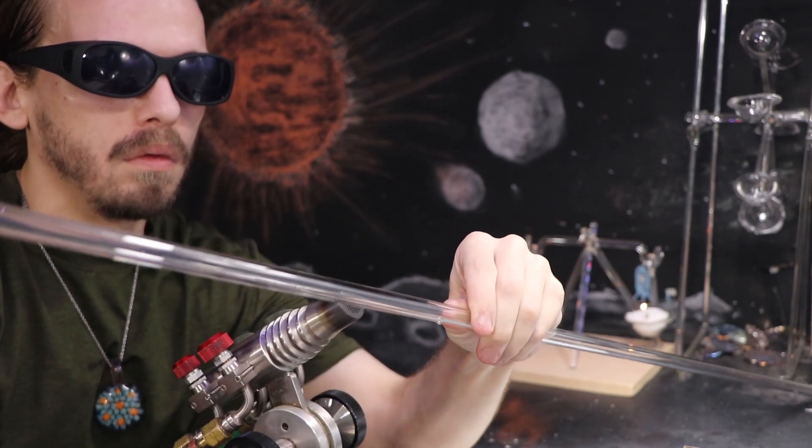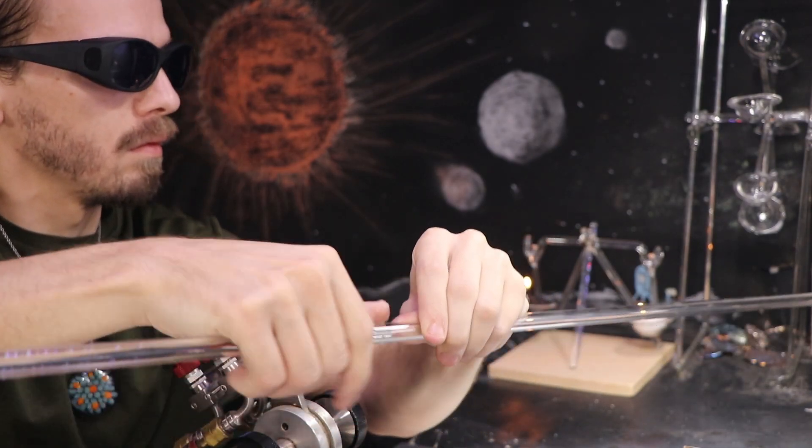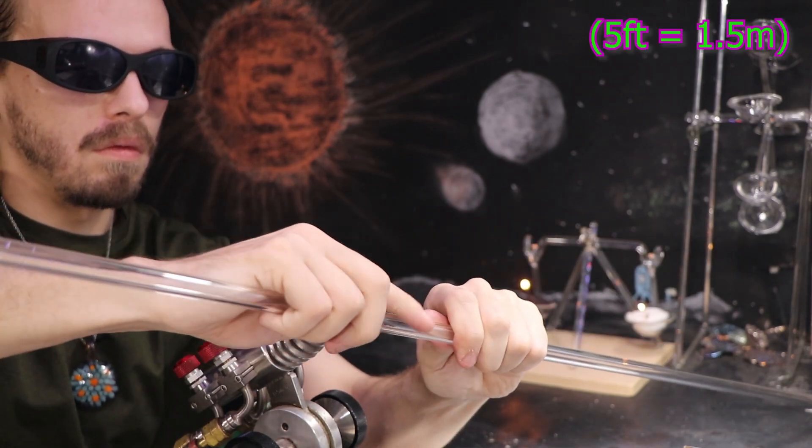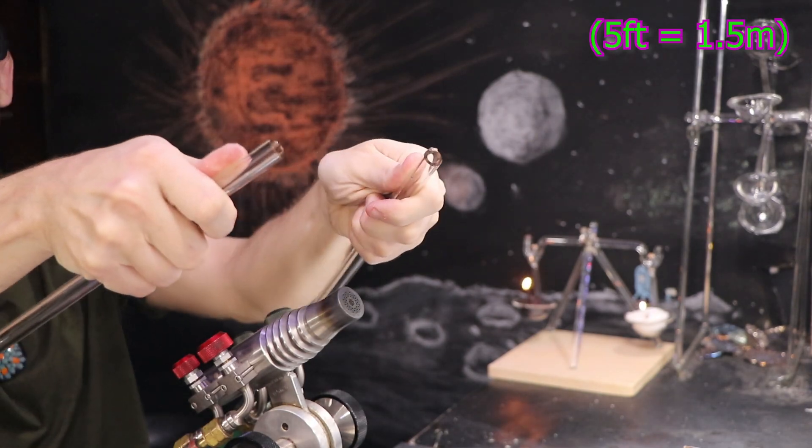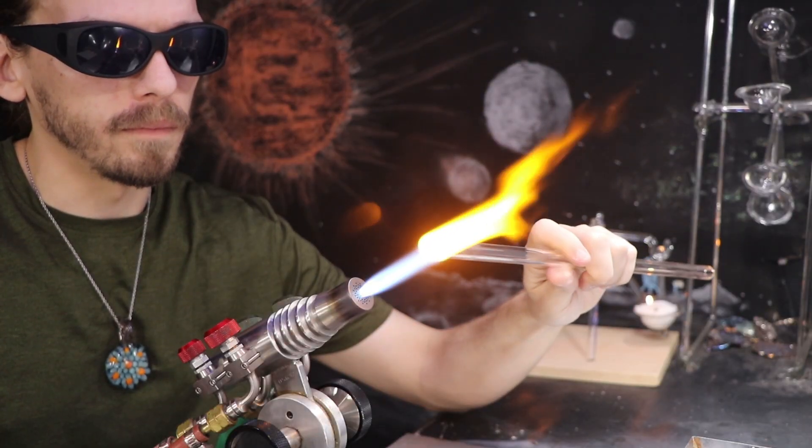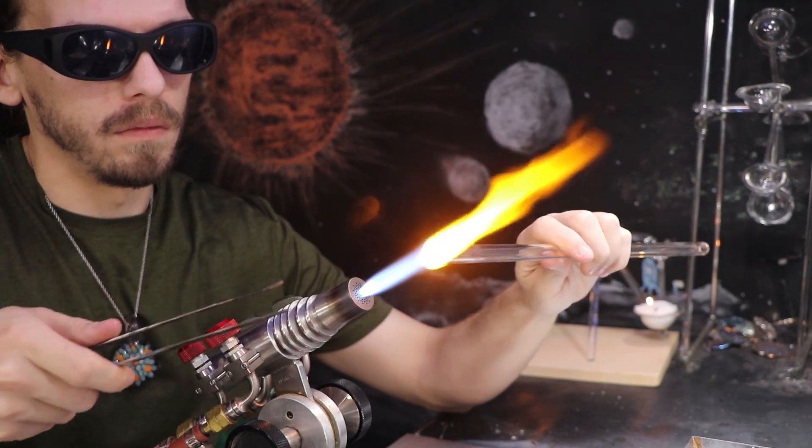I'll be using a 12mm heavy wall tube for this project. They start out 5 feet in length, so I'm squaring and snapping it down to a smaller size. I'm going to begin to melt and close one of the ends in order to blow into it later.